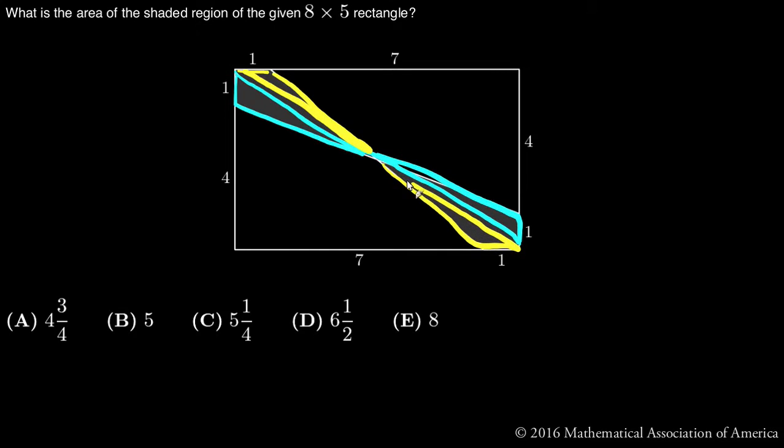So what I end up with is four triangles. Each of these triangles has a base of one, so I'll call this area one. One half, the base is one, and the height is half the distance from here to here, which is going to be five halves.